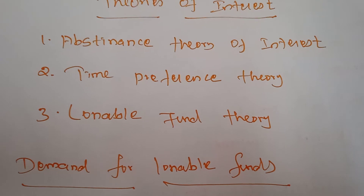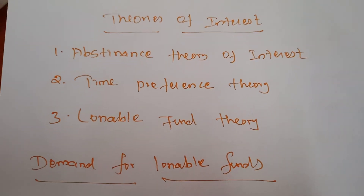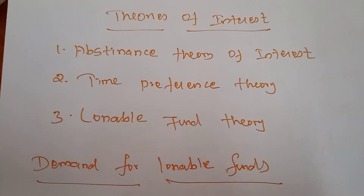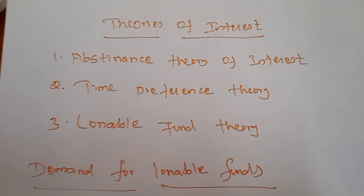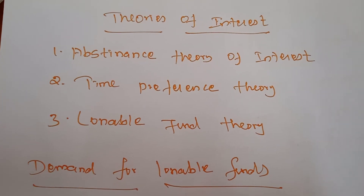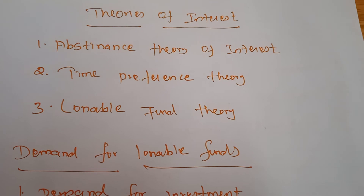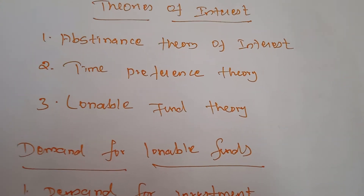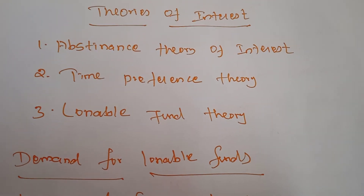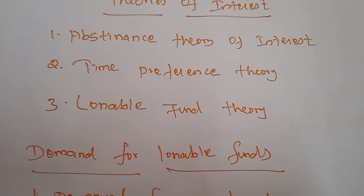Some poor people only have to abstain or sacrifice their present consumption, and only then can they save. But rich people are not like that — even if they are not sacrificing their present consumption, they can make their savings more. Rich people have money for which they do not forgo interest. Holding of money is to quench the thirst for liquidity. Most rich people will hoard their money without getting interest, while poor people only will have interest in saving.